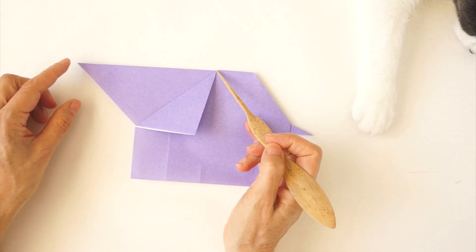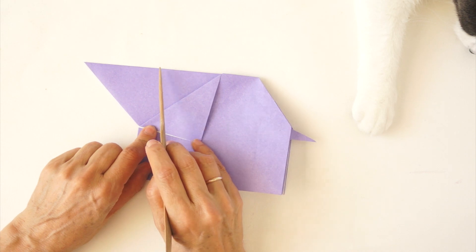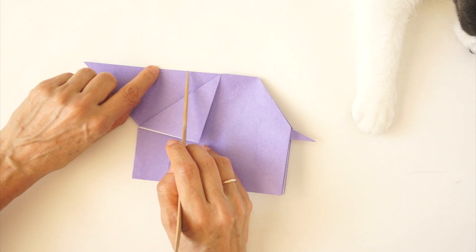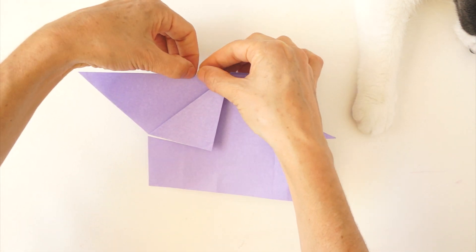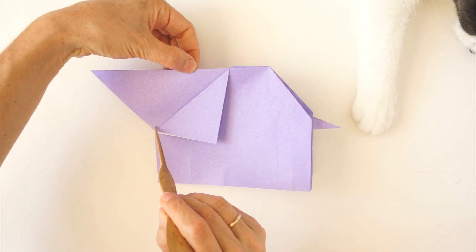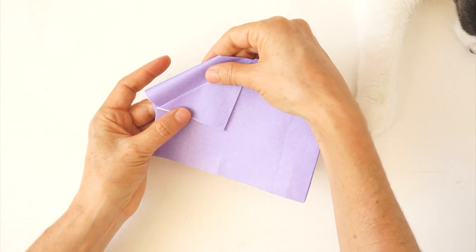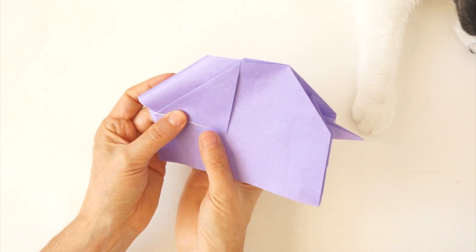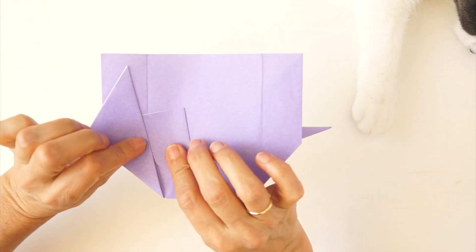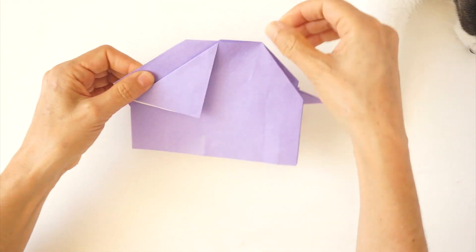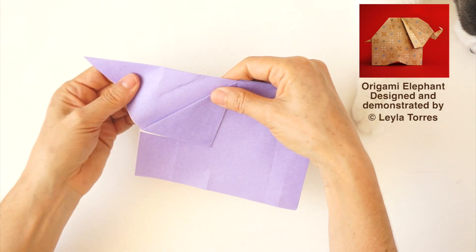Now we are going to visually locate half the distance between here and here. About here. That will be the beginning of our next fold. That fold will be parallel to this edge. About here. Fold to the back so that we see and make sure that it is parallel. About there. And fold it to the front. Unfold.